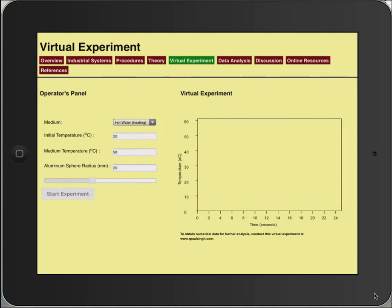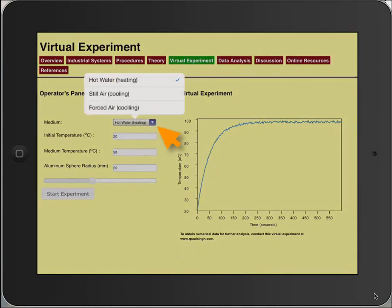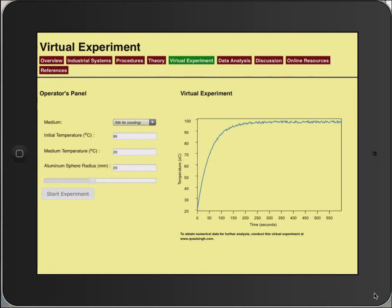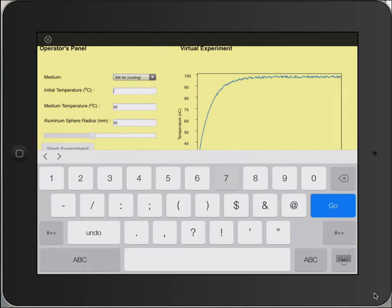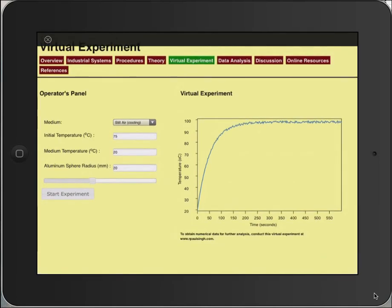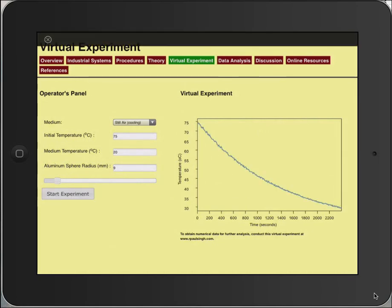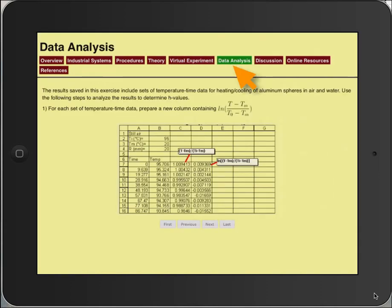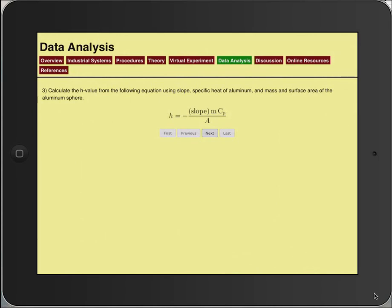In the Operators panel, the user may select any of the conditions. For example, here a transducer is exposed to hot water heating and the center temperature is measured. Similarly, one may do this experiment in a cooling environment and change any of the input conditions. Here the initial temperature is changed to 75, and the radius of the transducer may also be changed.